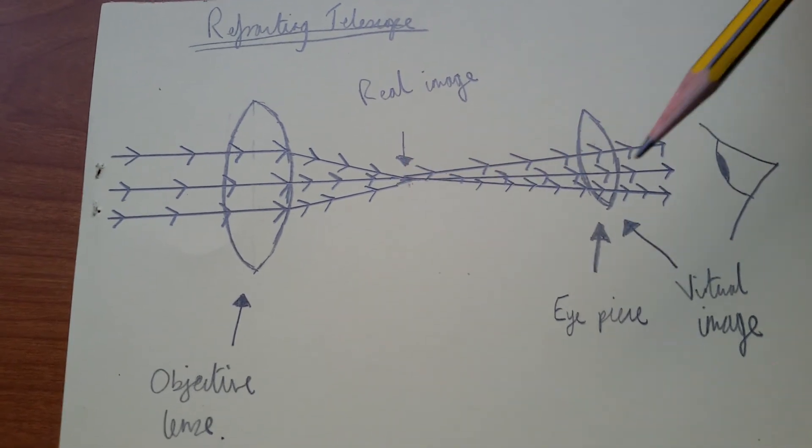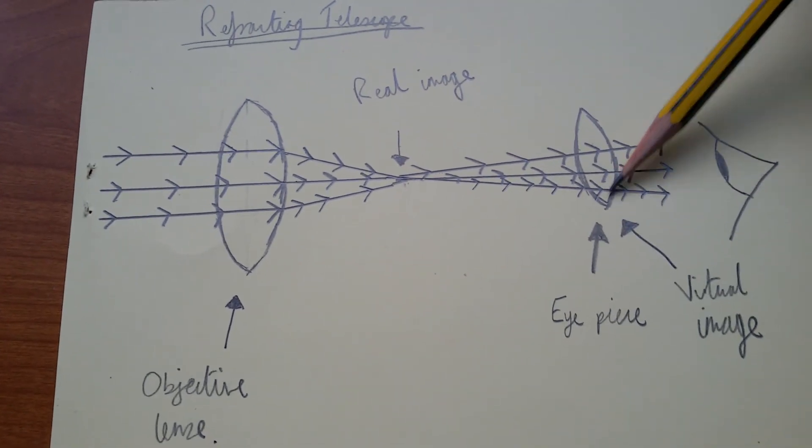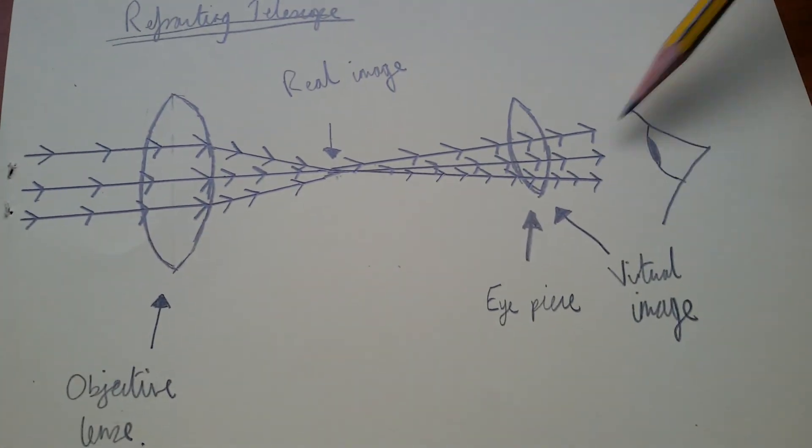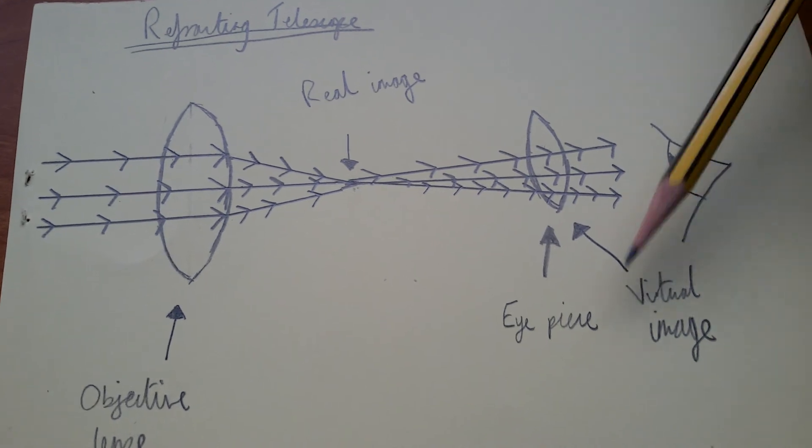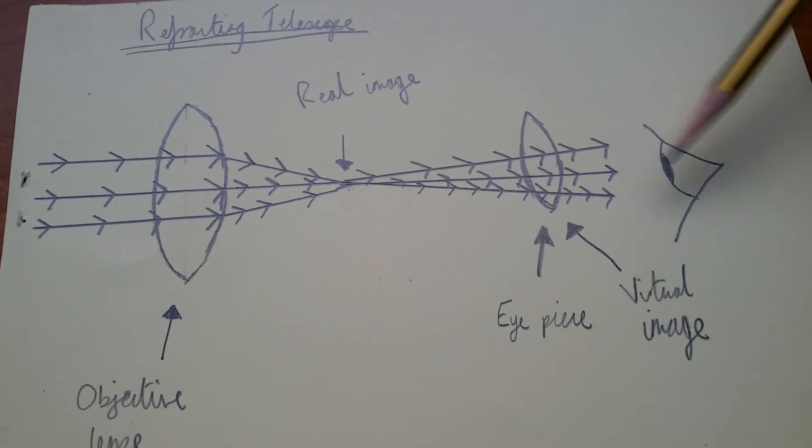This real image is being magnified by the eyepiece into a much bigger and wider image for the eye to see, for the retina to see.